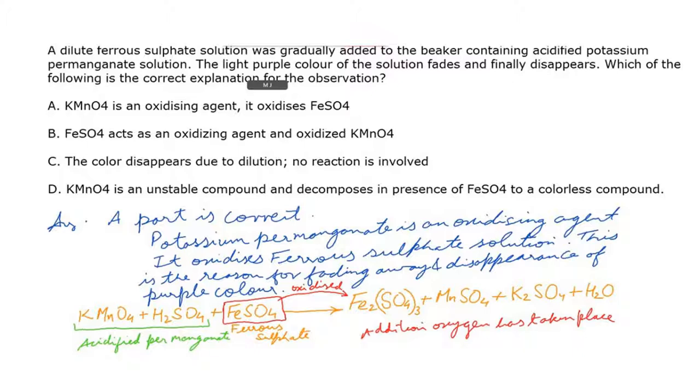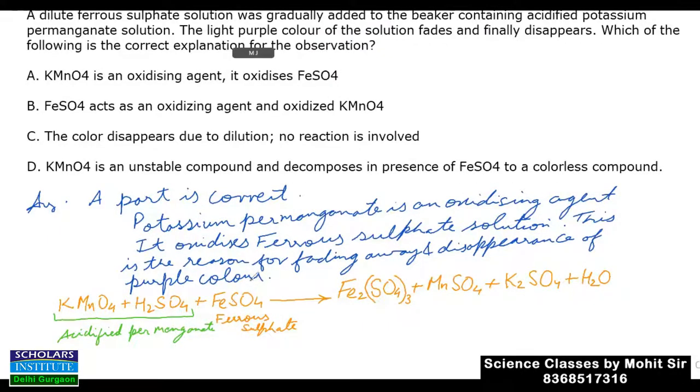Let me explain with the help of the equation what oxidation is taking place. The reaction is: potassium permanganate with sulfuric acid plus FeSO4 gives Fe2(SO4)3 plus MnSO4 plus K2SO4 plus H2O. Clearly we can see that ferrous sulfate has been oxidized.